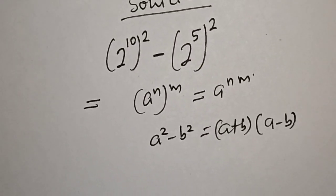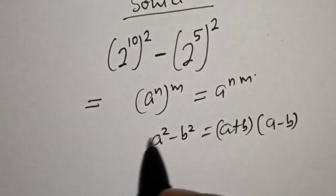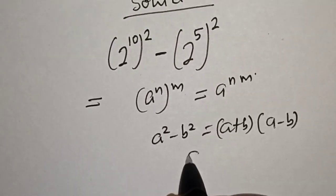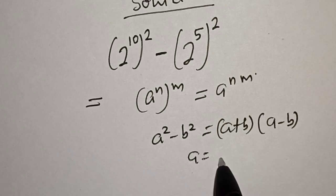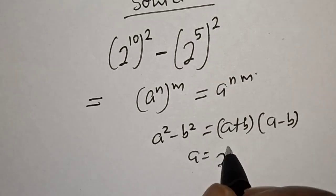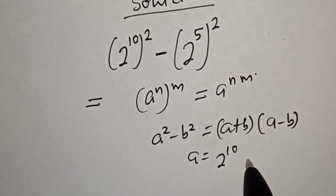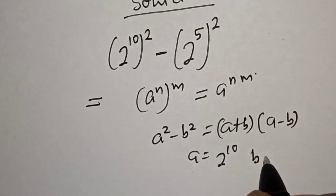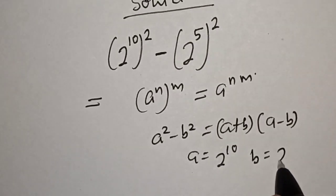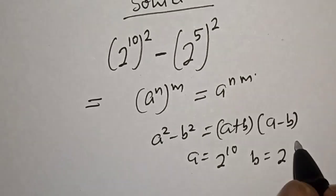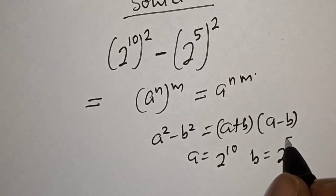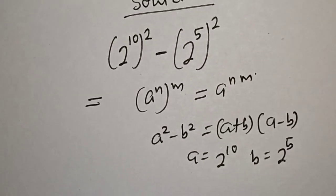Then let's substitute: a is equal to 2 to the power of 10, and b is equal to 2 raised to power 5.